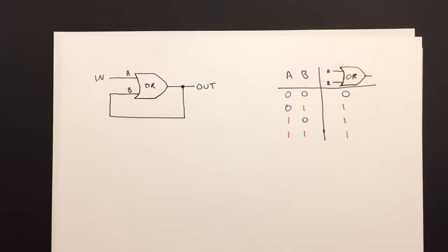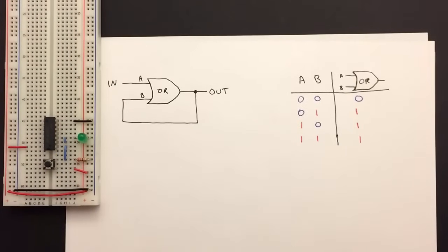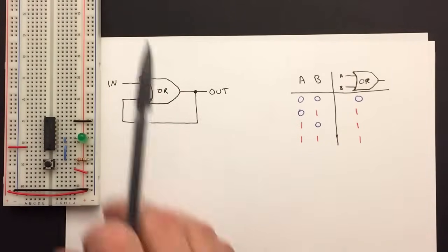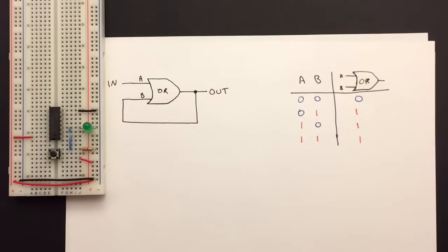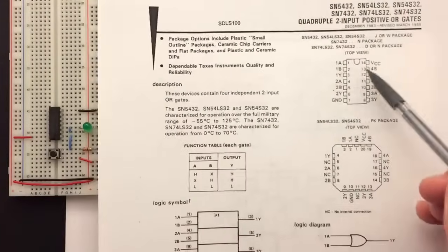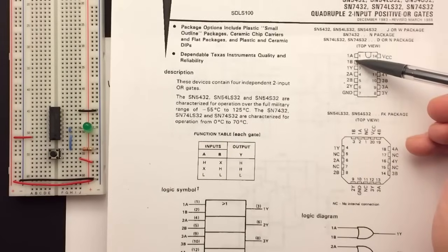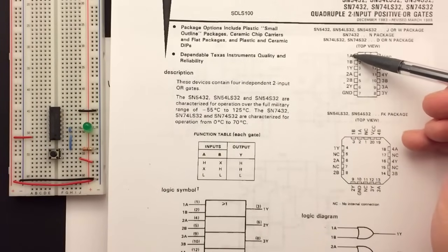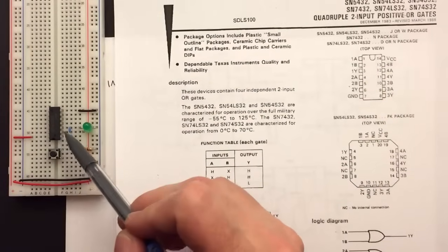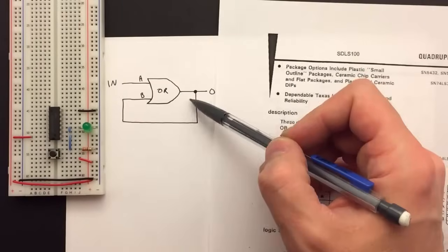To build a little bit of intuition for what's going on here, I think it's easiest to build a circuit and see what happens. This is that circuit. It's got a 74LS32 chip, which has four OR gates on it. This is the pinout for it. With the four OR gates, A, B, and Y are input A, input B, and Y is the output — the first three pins.